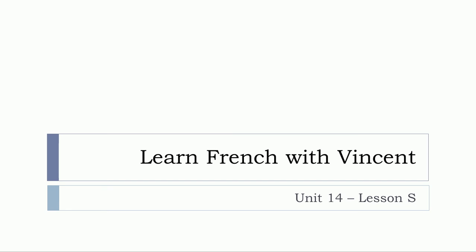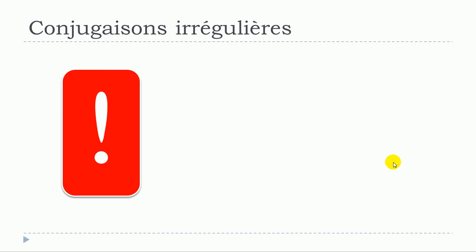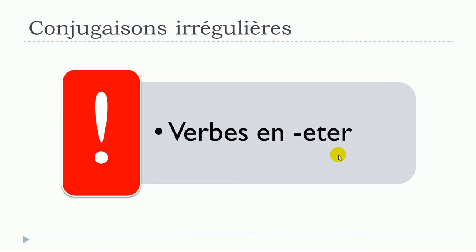Bonjour à tous and welcome to Learn French with Vincent. This is unité 14, leçon S, and in this lesson we'll work together on les conjugaisons irrégulières. We'll see especially the verbs that end with TER — regular verbs from the first group ending with ER — but we'll see that these verbs will be in some cases a bit different.